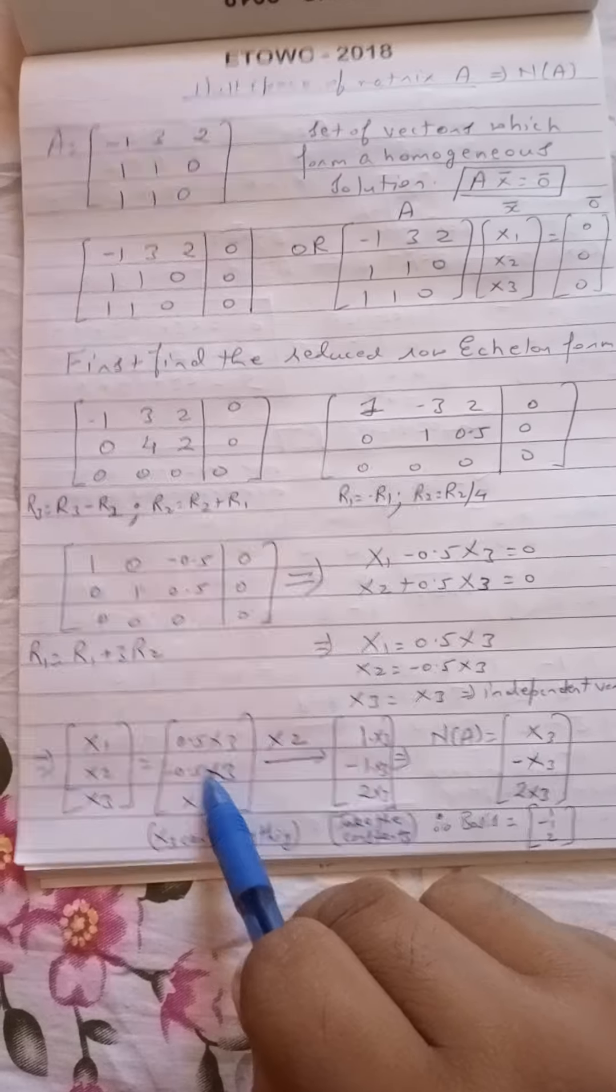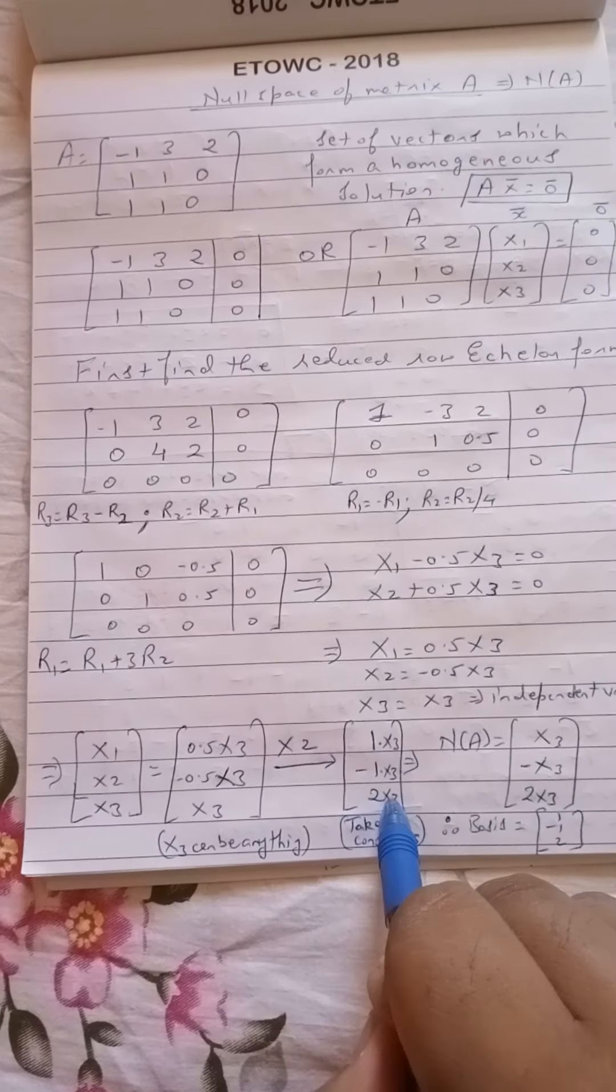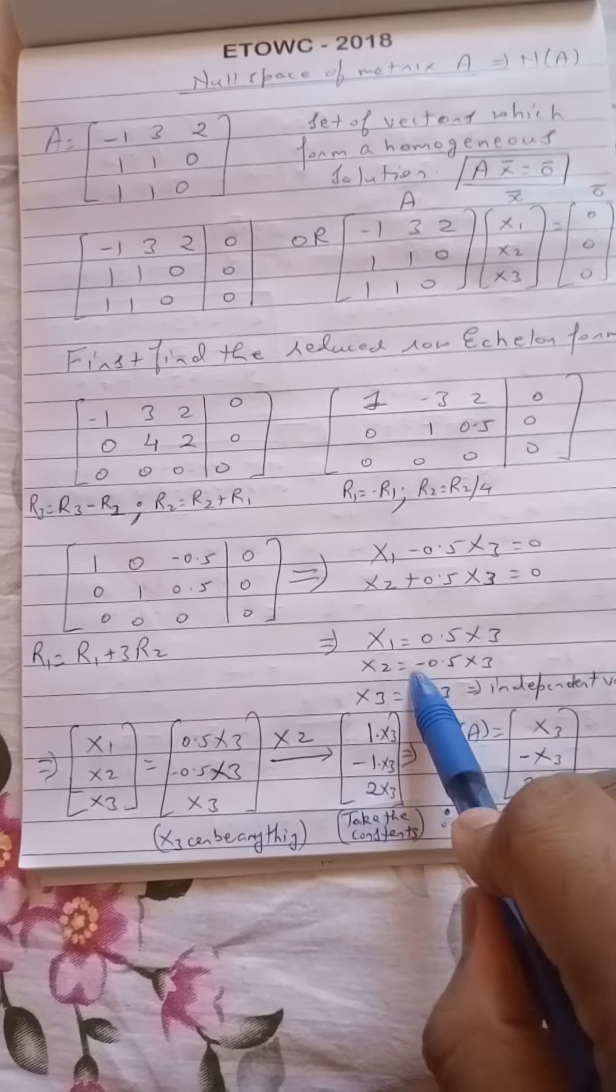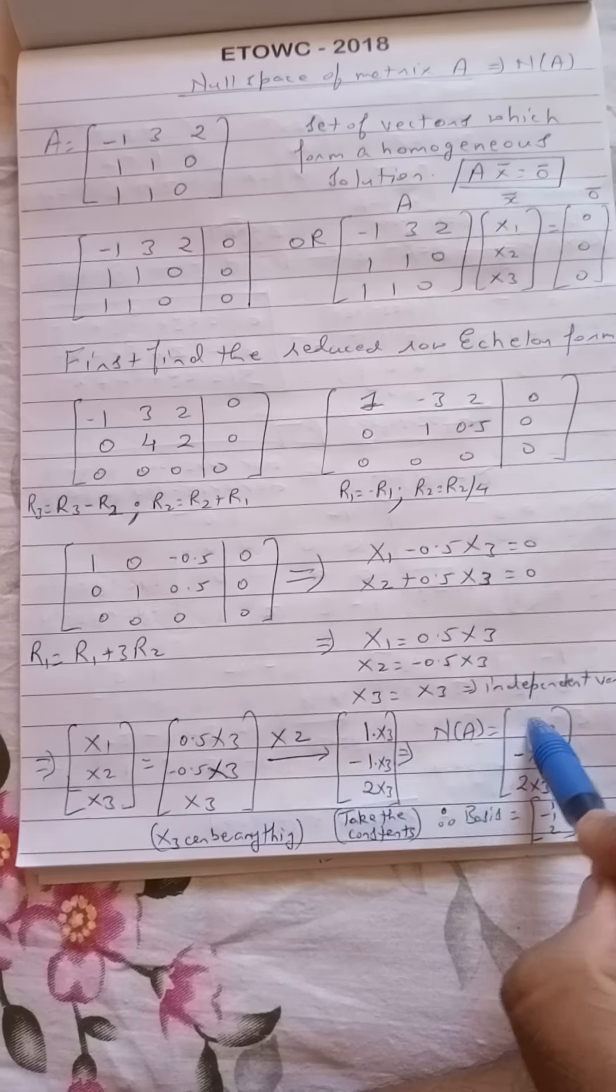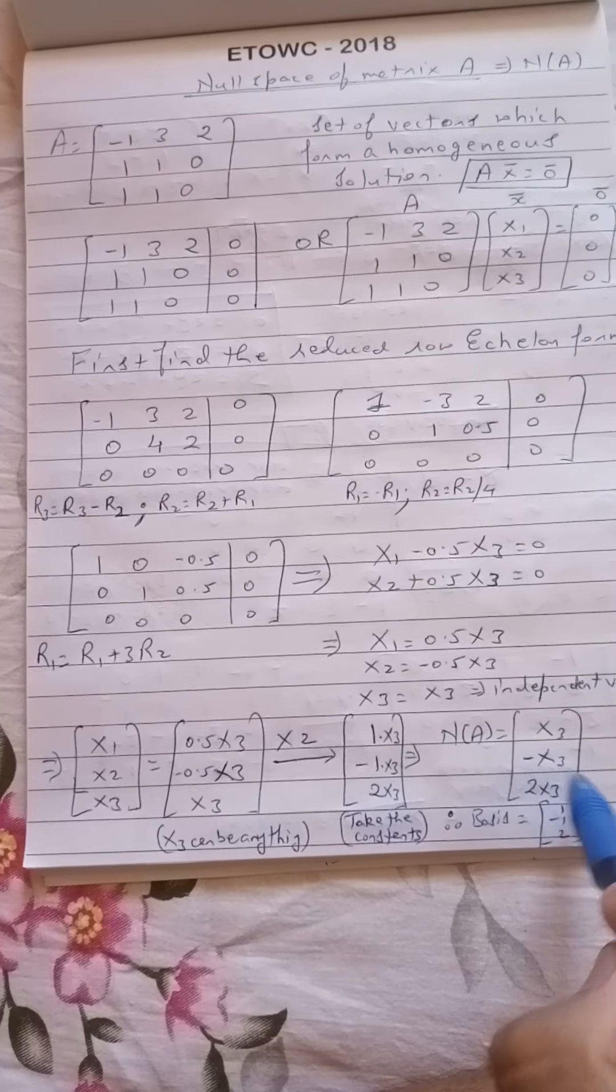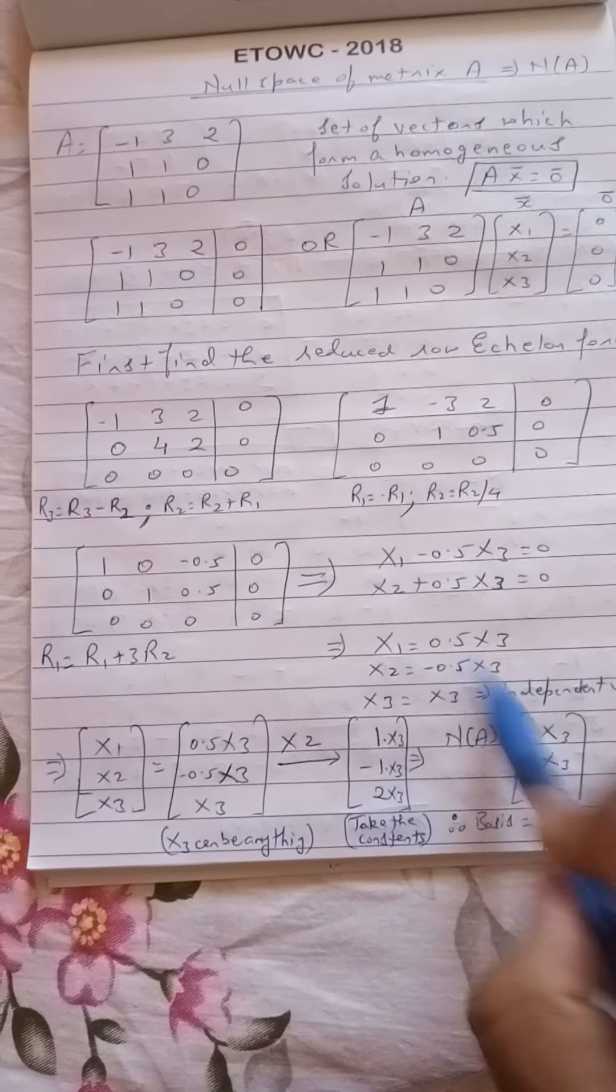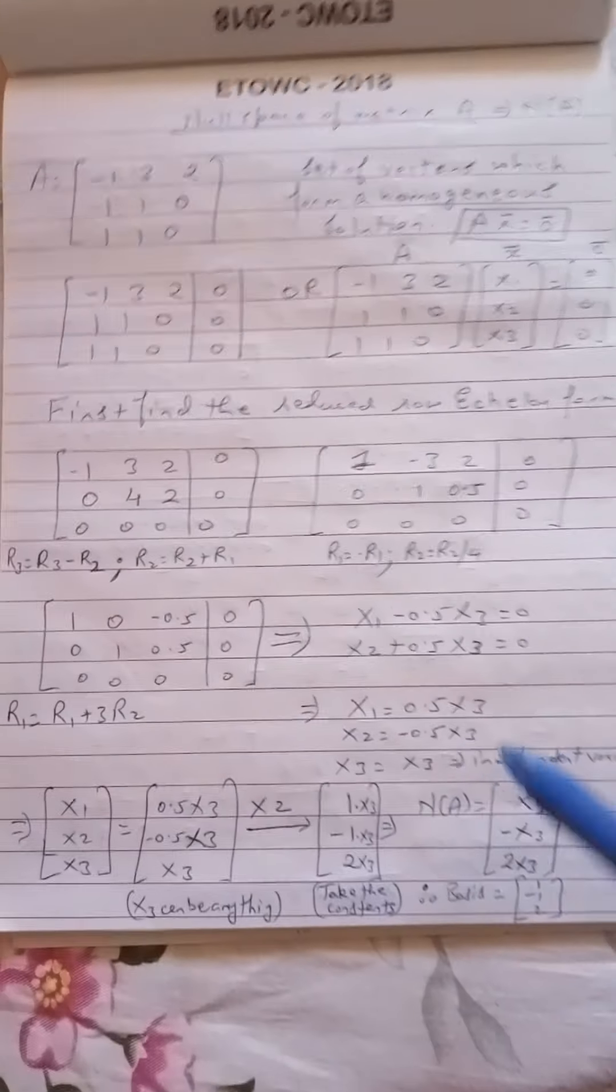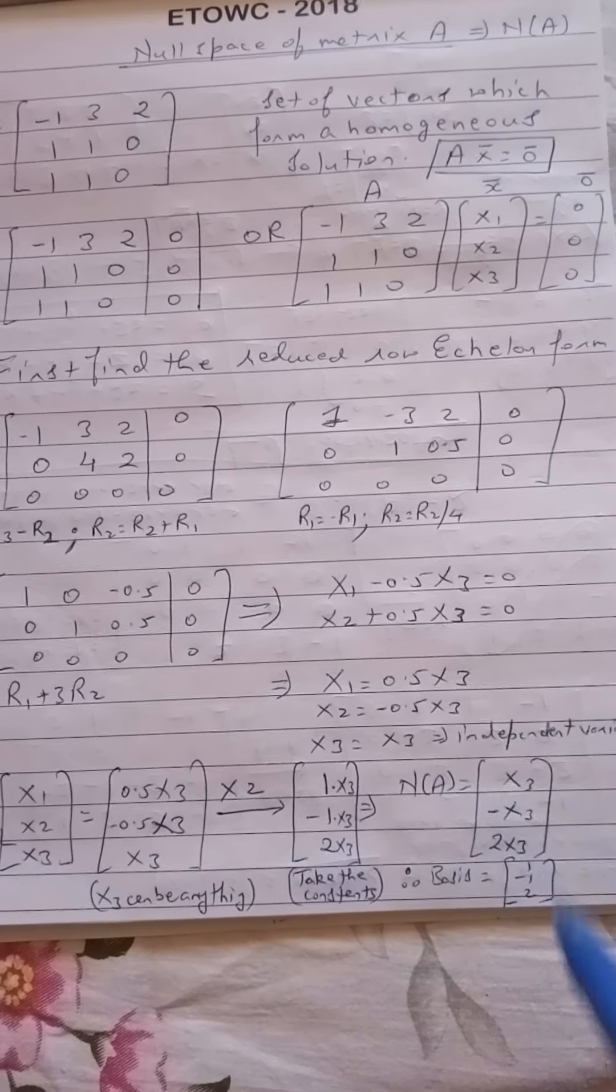So therefore now I just write this in a much better form by multiplying it with 2. So therefore this becomes 1 into X3, minus 1 into X3, and 2 into X3. Therefore the null space of A just turns out to be X3, minus X3, and 2 X3.